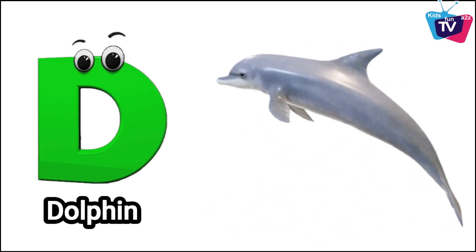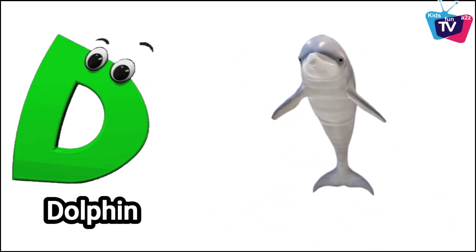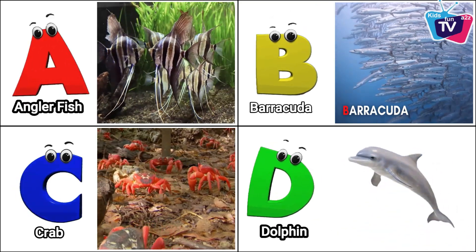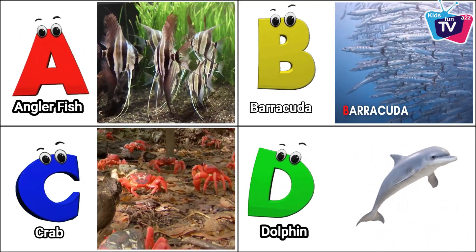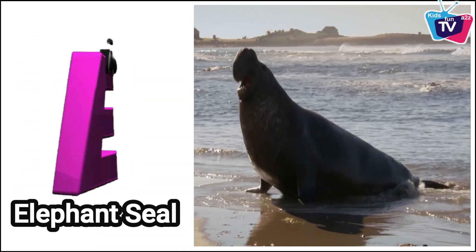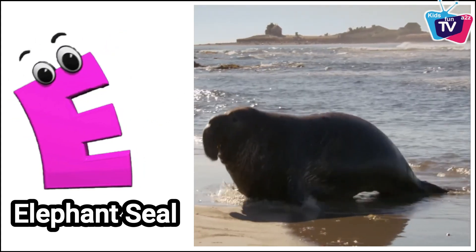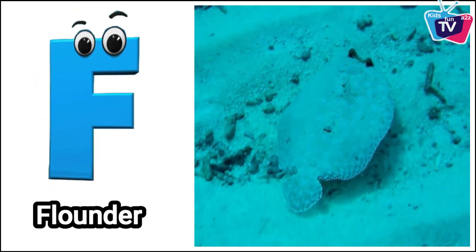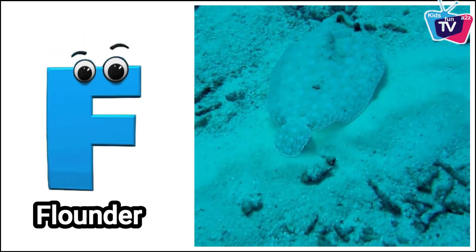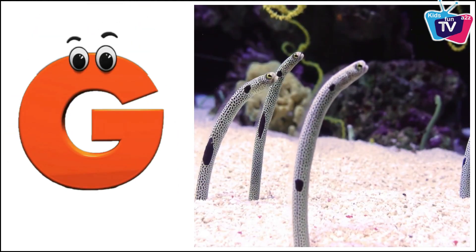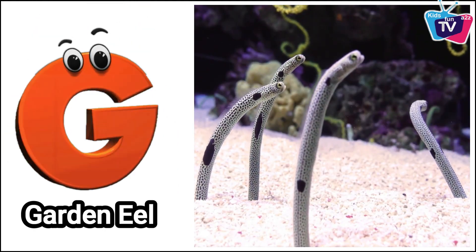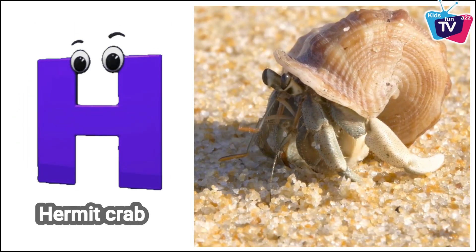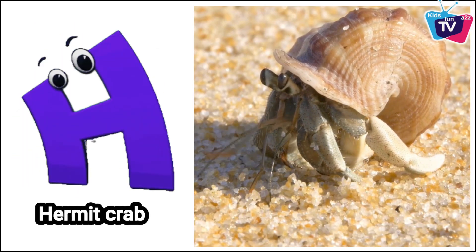D is for dolphin. E is for elephant seal. F is for flounder. G is for garden eel. H is for hermit crab.